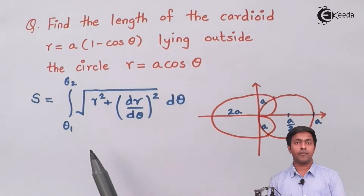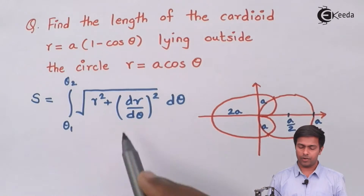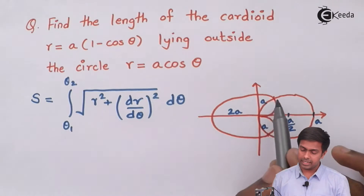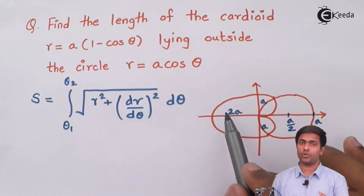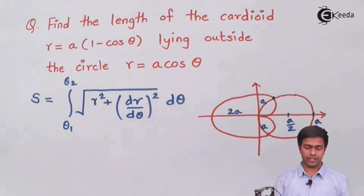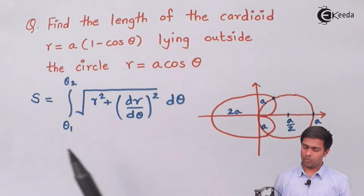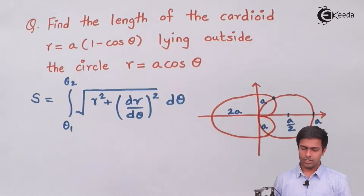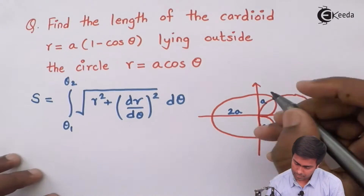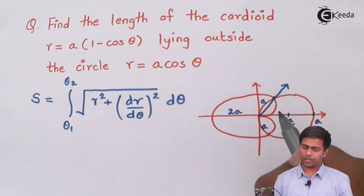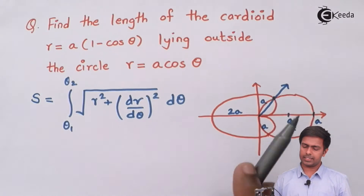If I want to find out this integration, first I should know the limits of integration. If you observe this region for which I want to find the length of the curve, at one point I need to find the value of theta, because from there my theta will start. I can find out theta at this point, and I'll join this line. At this point, I need to find out what is the value of theta, then this line will move till here.